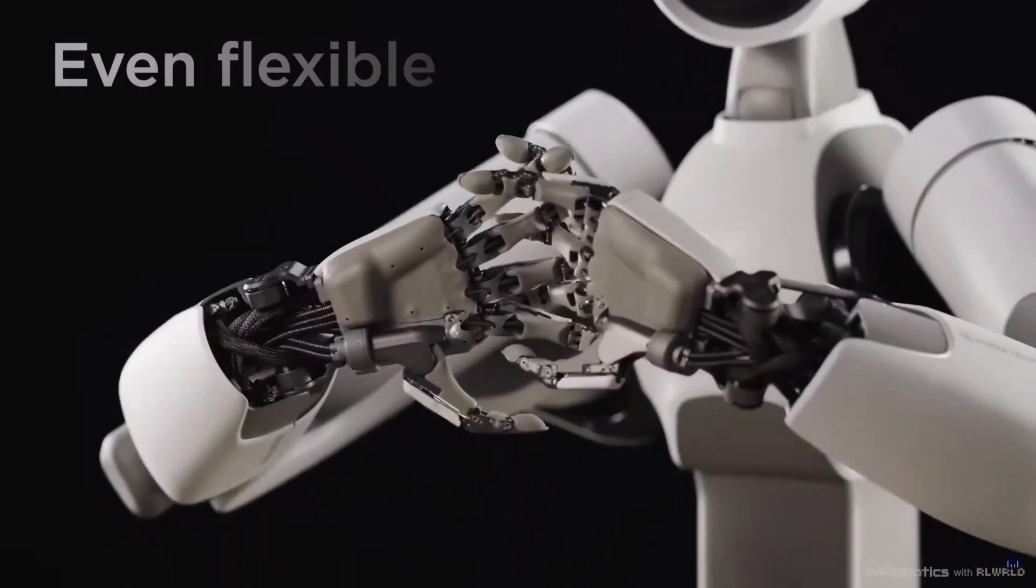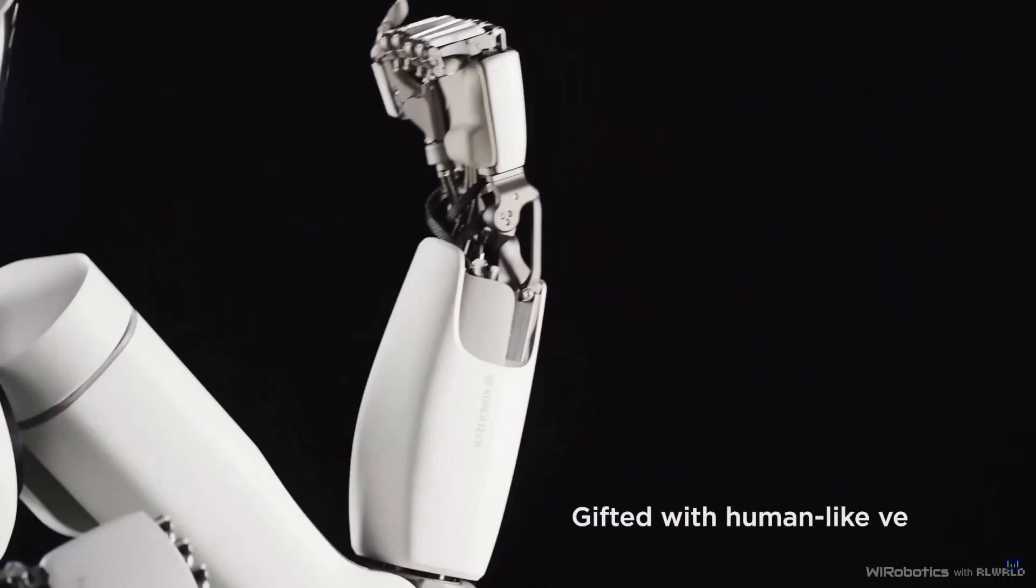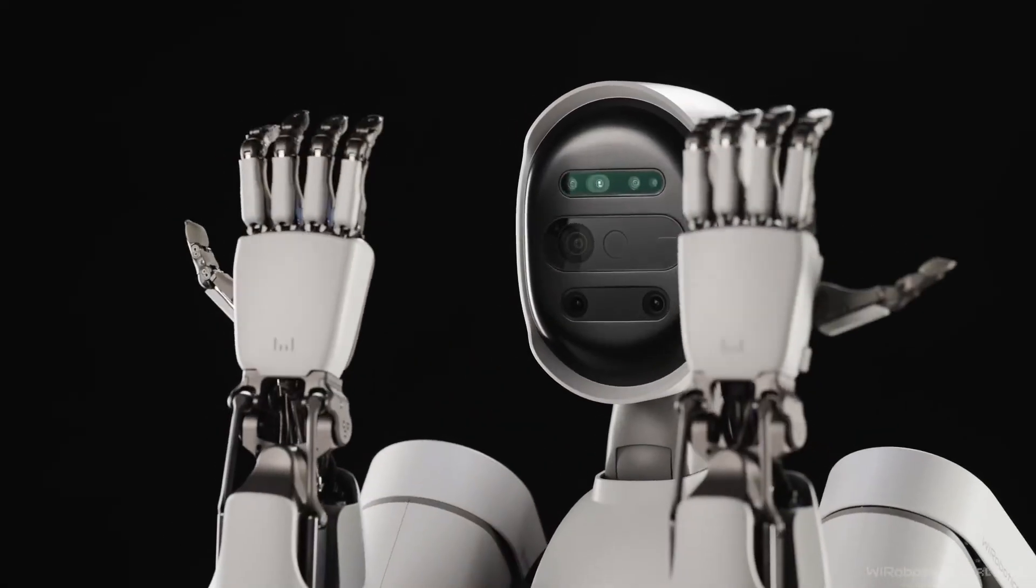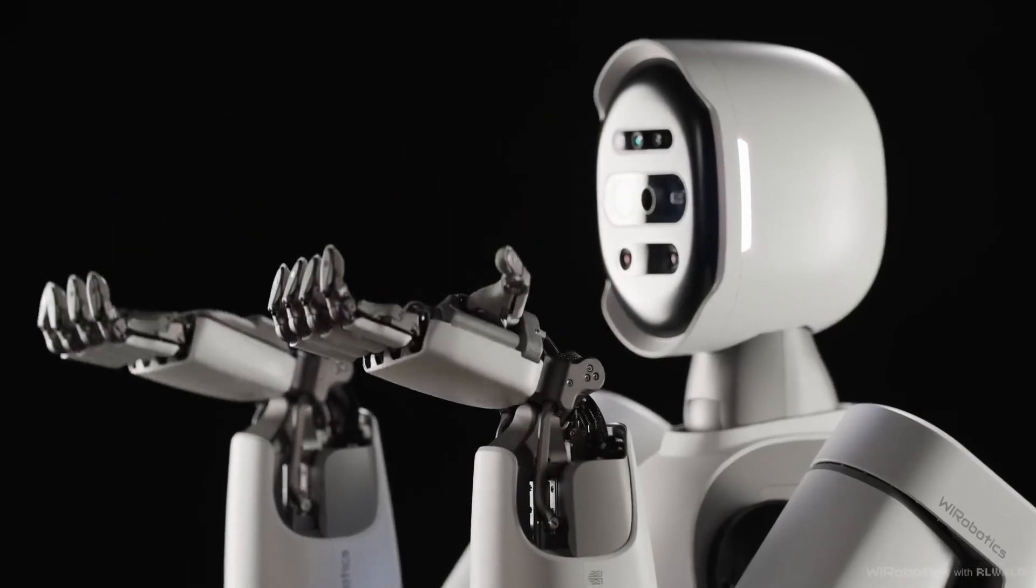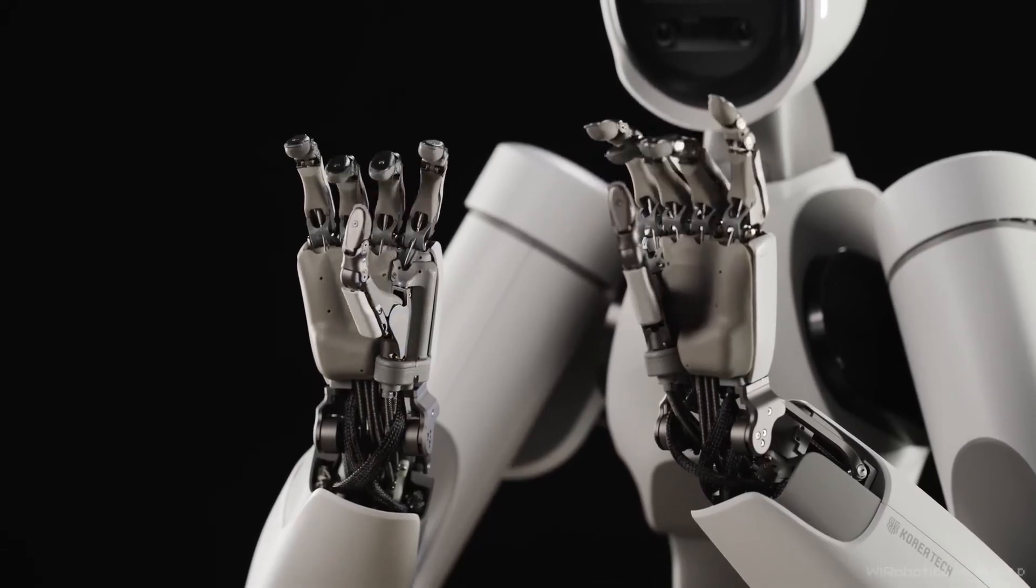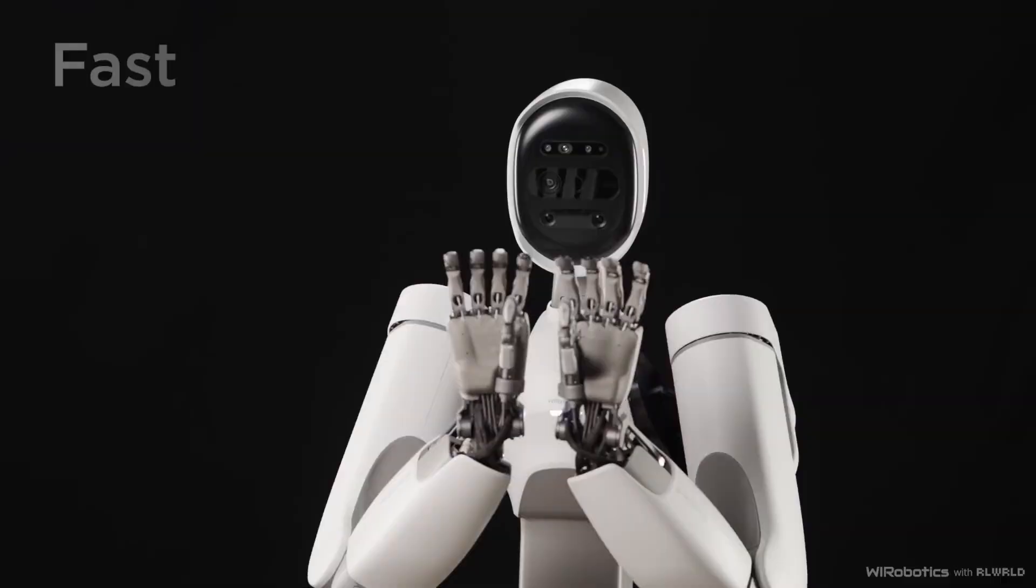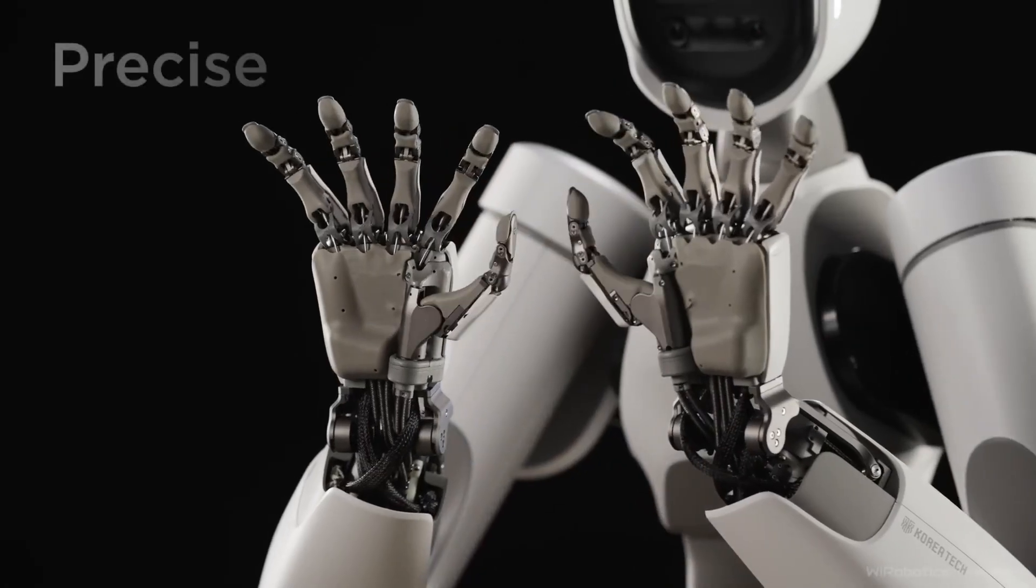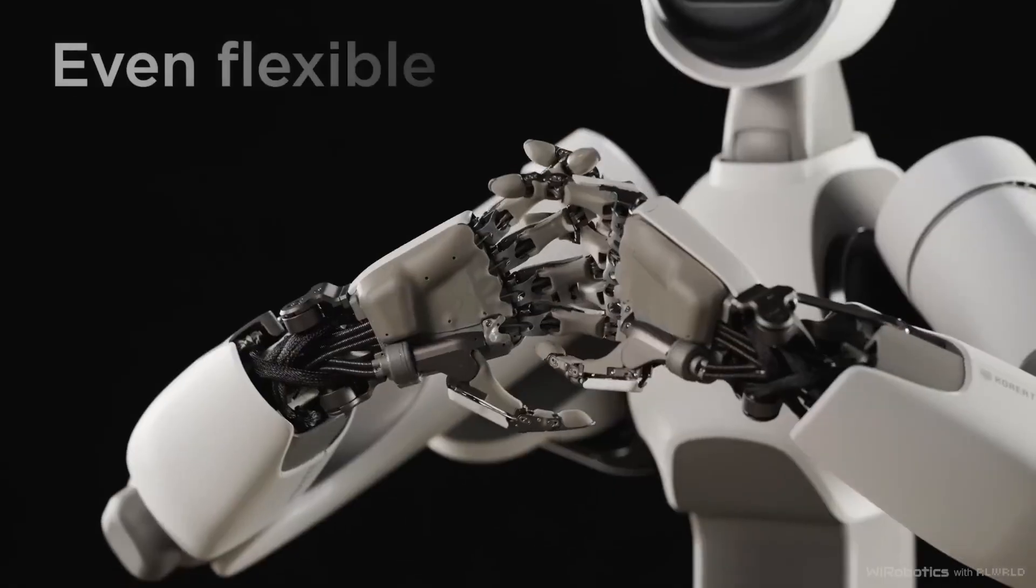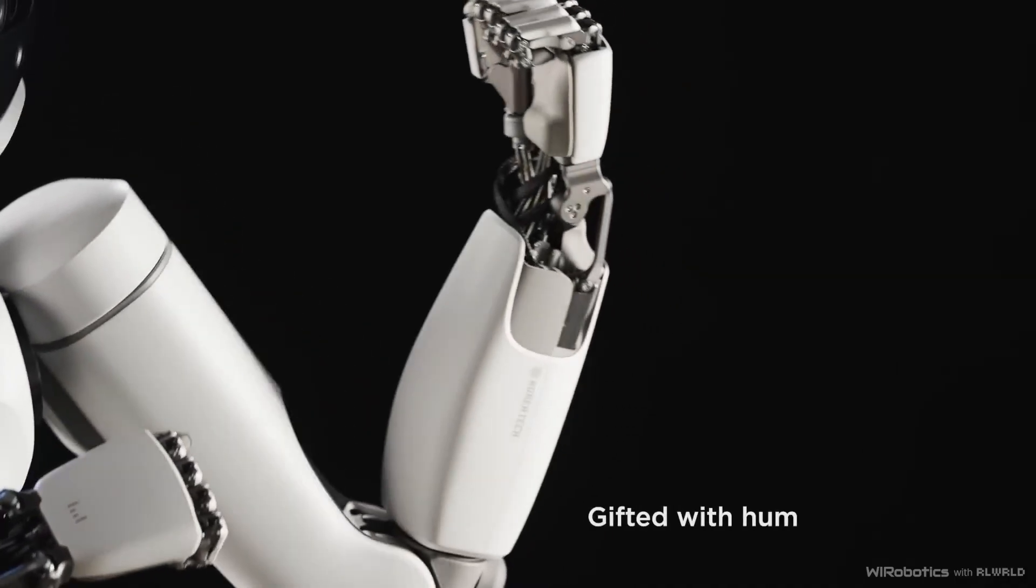First, let's start with the hands themselves, because that's the real headline here. Alex has 15 degrees of freedom in each hand. If you're not familiar with the term, degrees of freedom basically refers to how many independent movements a mechanism can perform. A typical human hand has around 27 degrees of freedom, depending on how you count the tiny joint movements. So when a robot comes this close at 15 DOF, that's already edging into territory where the motions are no longer clunky or mechanical. They start to feel fluid, natural, and human-like.